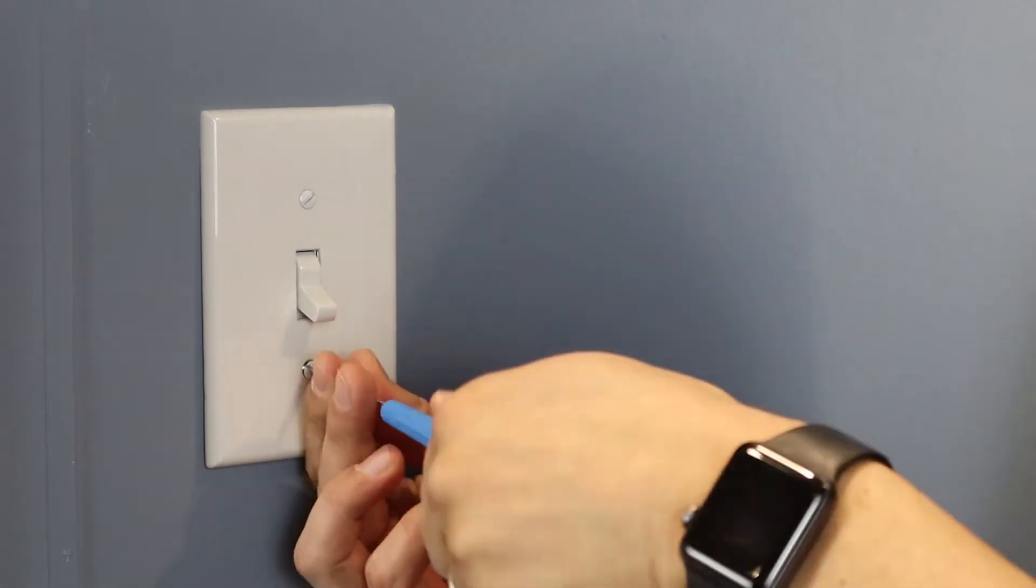Before removing your switch, please make sure that your power is turned off at the circuit breaker. First step is to remove your wall plate and pull your old switch from the wall.